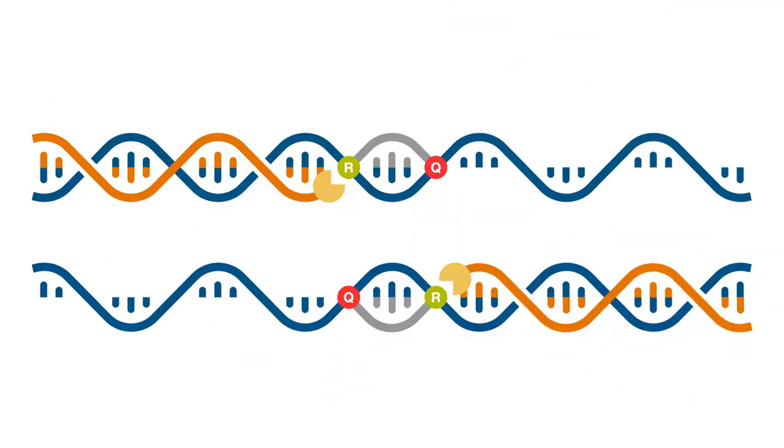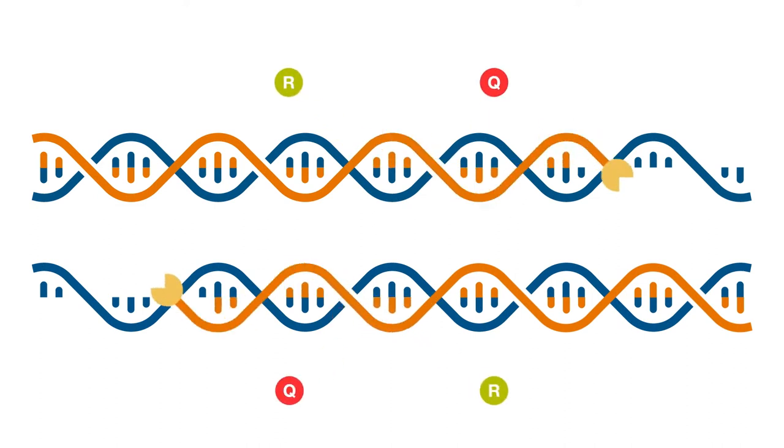You see, our enzyme has what's referred to as 5' exonuclease activity, meaning that it pretty much eats DNA for lunch. So when Taq reaches a probe, it simply chews it to bits on its way to creating a new amplicon. As a result, the reporter and quencher are physically separated.